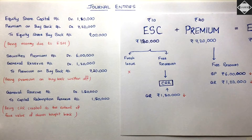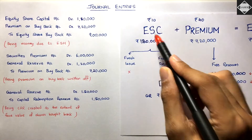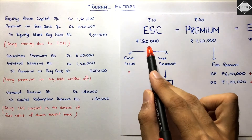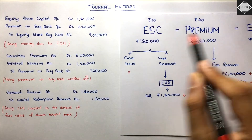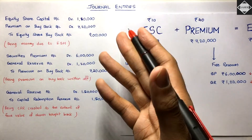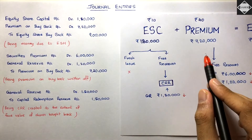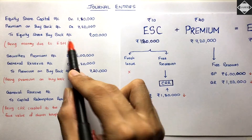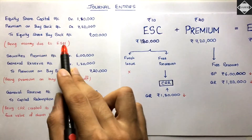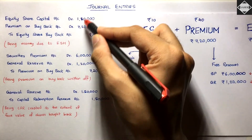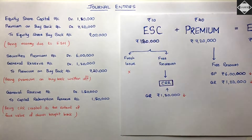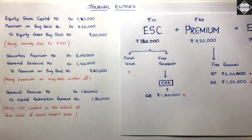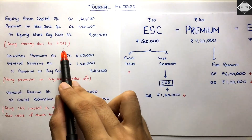Journal Entry 1 - Due Entry: Debit Equity Share Capital Account ₹1,80,000; Debit Premium on Buyback Account ₹7,20,000; Credit Equity Share Buyback Account ₹9,00,000. Being money due to equity shareholders on buyback.